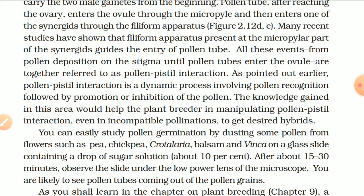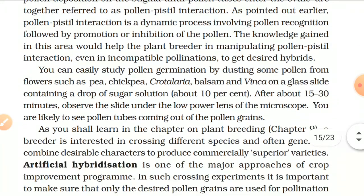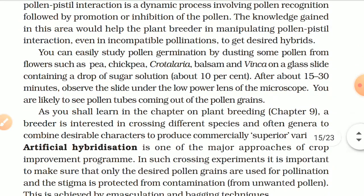You can easily study pollen germination by dusting some pollen from flowers such as pea, chickpea, crotalaria, balsam, and vinca on a glass slide containing a drop of sugar solution of about 10%. After about 15–30 minutes, observe the slide under the low-power lens of the microscope. You are likely to see pollen tubes coming out of the pollen grains.